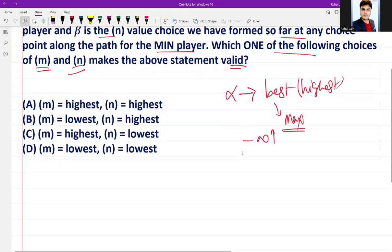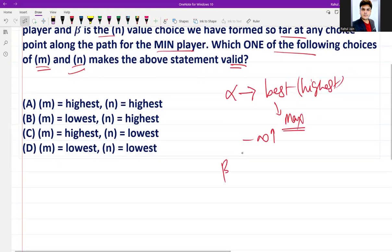If I talk about beta, it represents the best lowest value that the min player can guarantee so far. It starts from plus infinity and decreases as the search progresses.